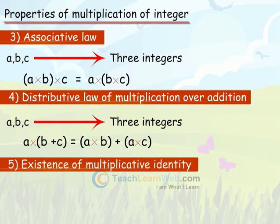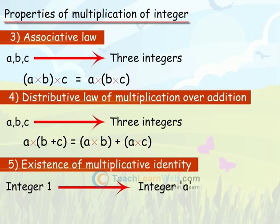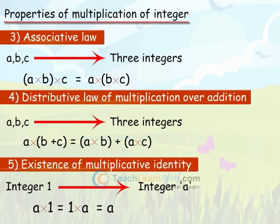Existence of Multiplicative Identity: The integer 1 is the multiplicative identity for integers. So for any integer a, we have a into 1 equals 1 into a, which equals a.